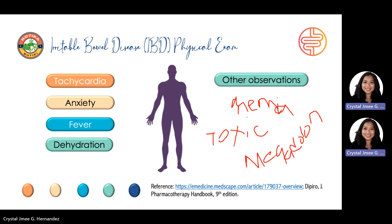In Crohn's disease, one may note fistula, abscesses, or even rectal prolapse. Occult blood on digital rectal exam can also be common. And in children, growth retardation may be noted.